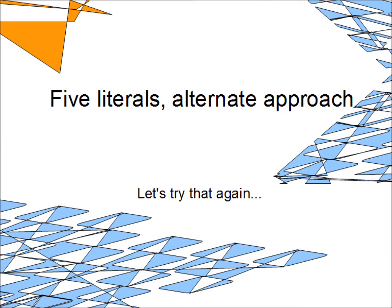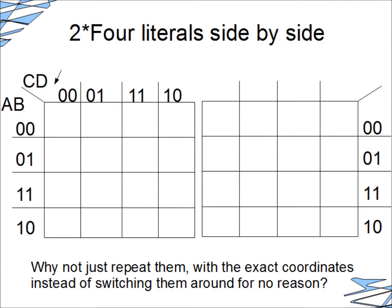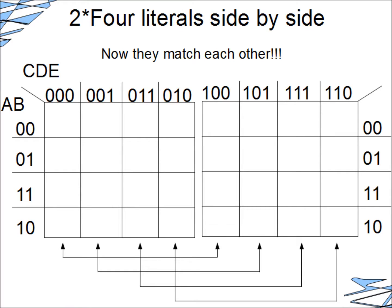So, without further ado, let's just get right back into the action. Five literals. Well, let's try this whole thing again. What happens if instead of having those four-literal Karnaugh Maps back-to-back, we have them side-by-side. And just repeat the coordinates. We're introducing a new letter to the columns. And we have two identical-looking maps. Same kind of association and all.